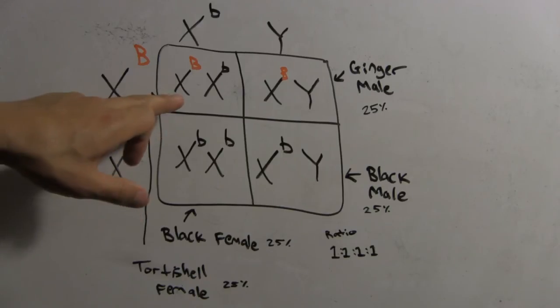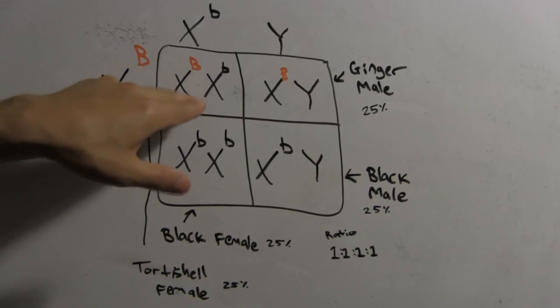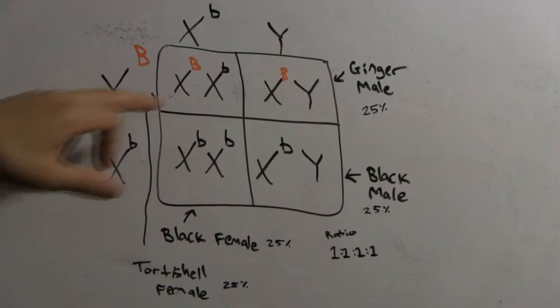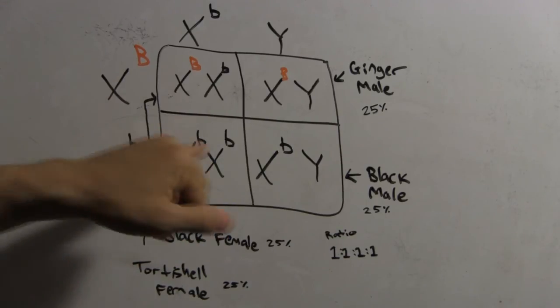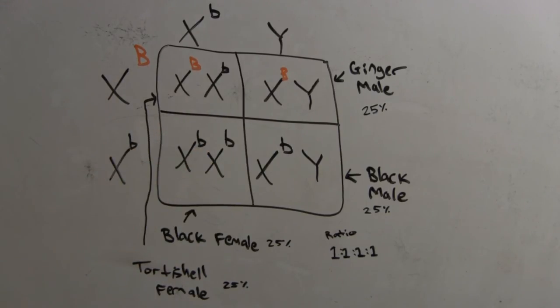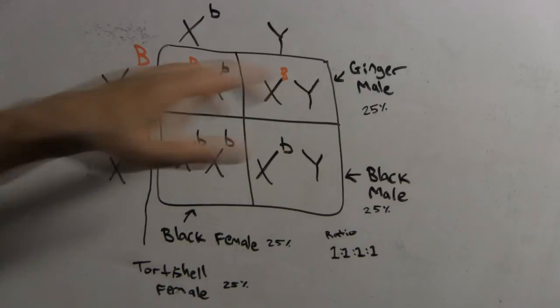So in this case, the first one you'll have is X uppercase B, X lowercase b. You get this result here. You have a tortoiseshell female. Go down here. X lowercase b, X lowercase b. Combine them, put them together. Lowercase b, there's two of them there. They're both recessive, and there's two of them. You have a black female. Lowercase b is black. There's two of them. It's going to be a black female.